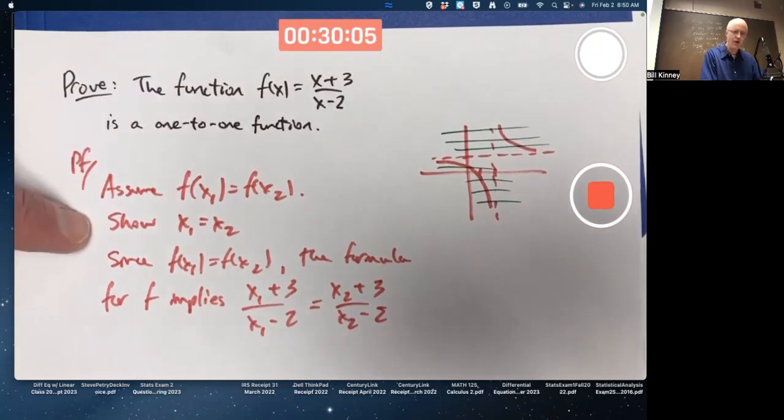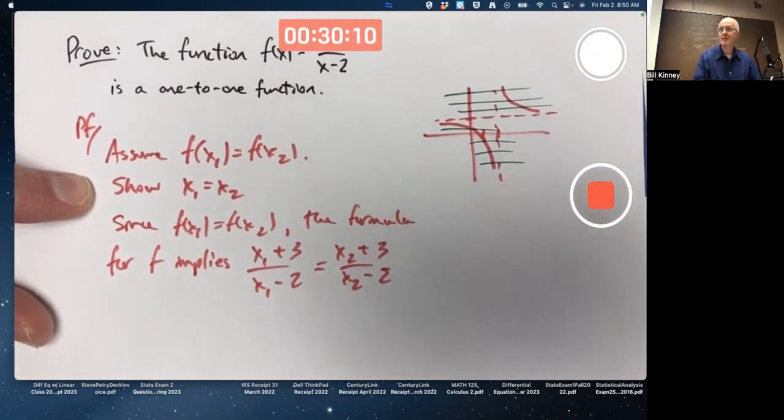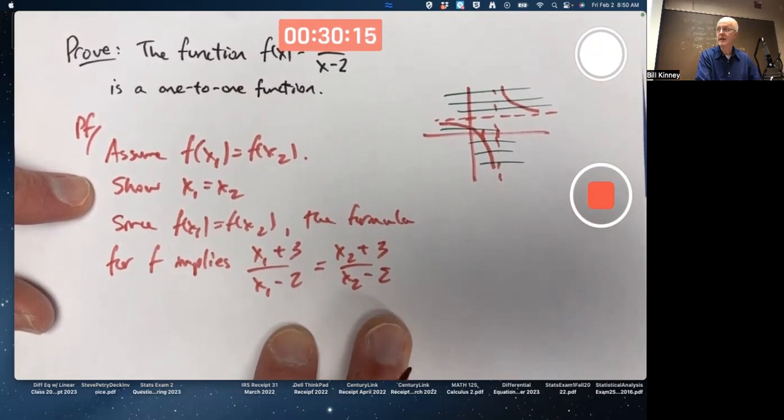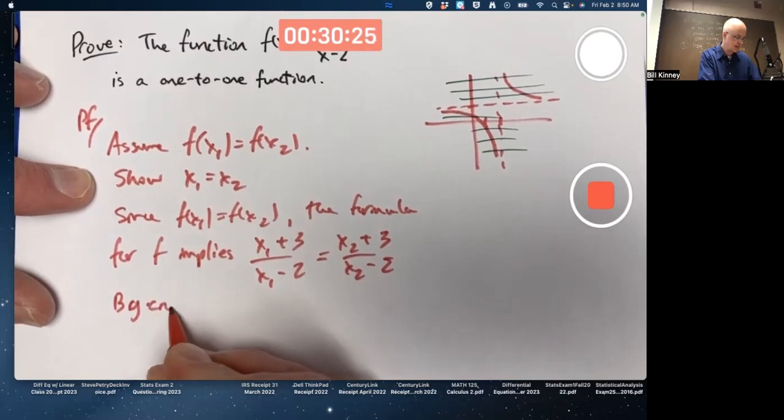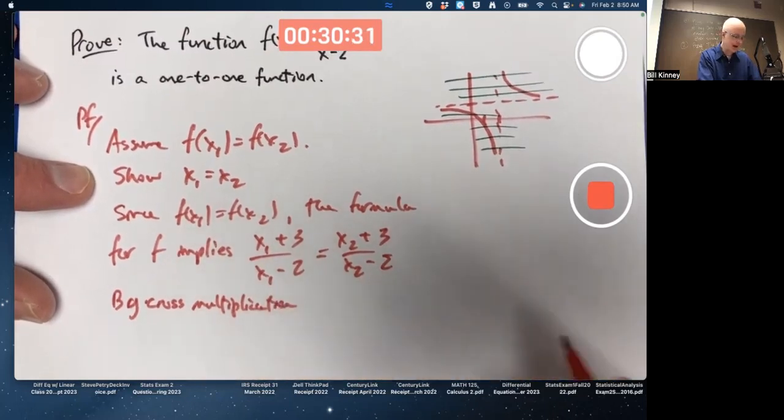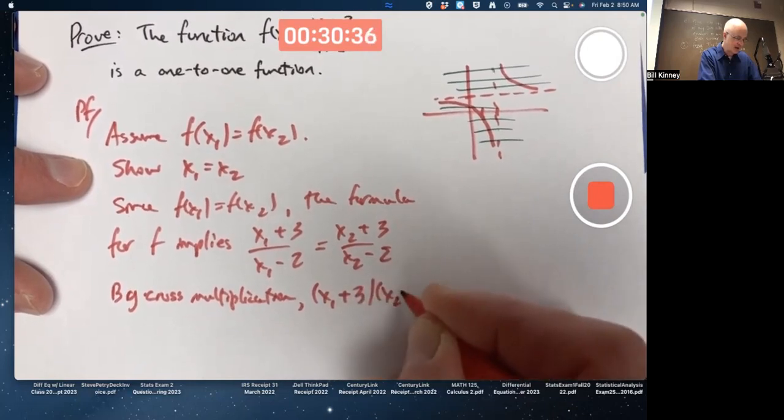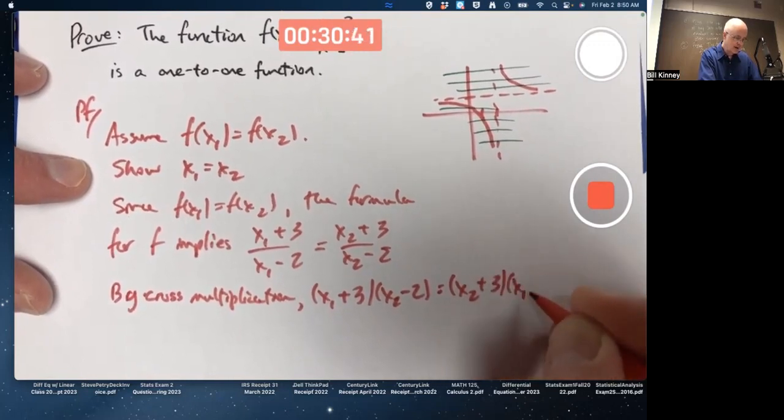What do you want to show? You want to show that x1 equals x2. It doesn't look so easy, does it? Well, just keep going. See what happens. Got two fractions being equal. That implies if I cross-multiply, I'll get equality. By cross-multiplication, which is really just multiplication applied a couple times, x1 plus 3 times x2 minus 2 equals x2 plus 3 times x1 minus 2.